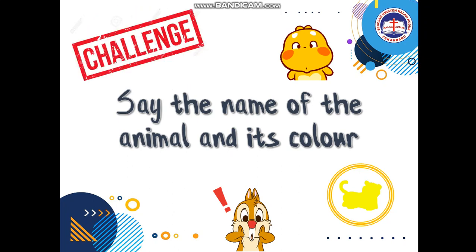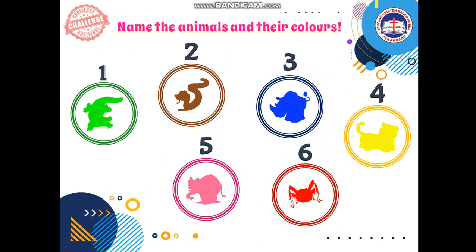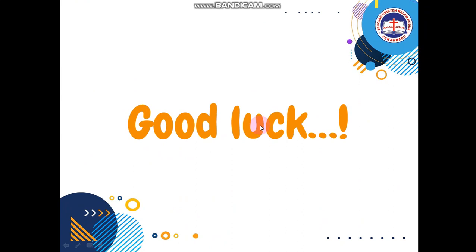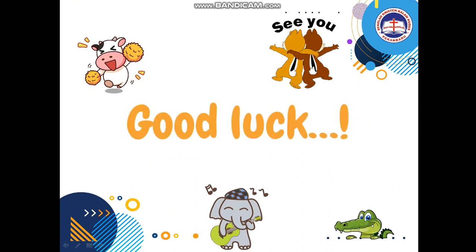I challenge you to say all the names of these animals and their colors. I want you to record yourself naming all these animals and their colors and send me the videos to my WhatsApp. I'll get back to you in the next video. Don't forget the name of the animals and the colors. Here's an example — a green crocodile, a brown snake, a blue rhino, a yellow tiger, a pink elephant, and a red spider. Good luck and I'll see you in my next video. See you guys, love you, bye!